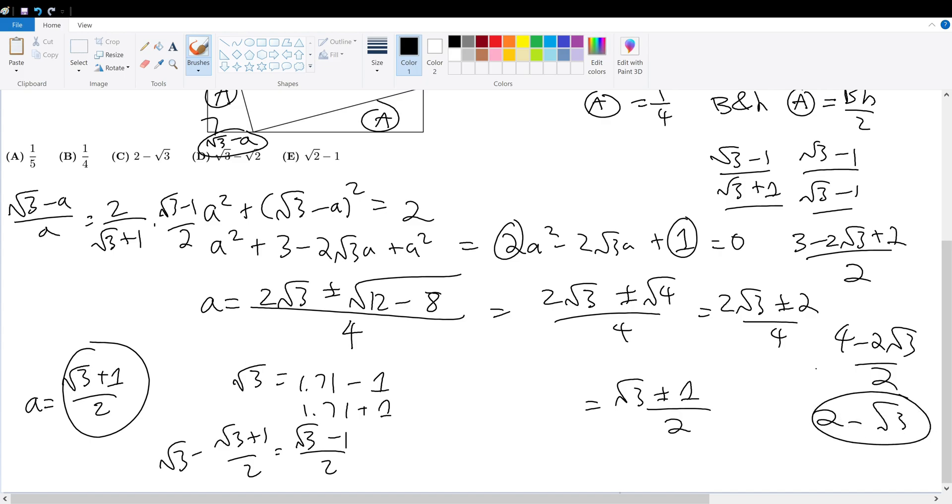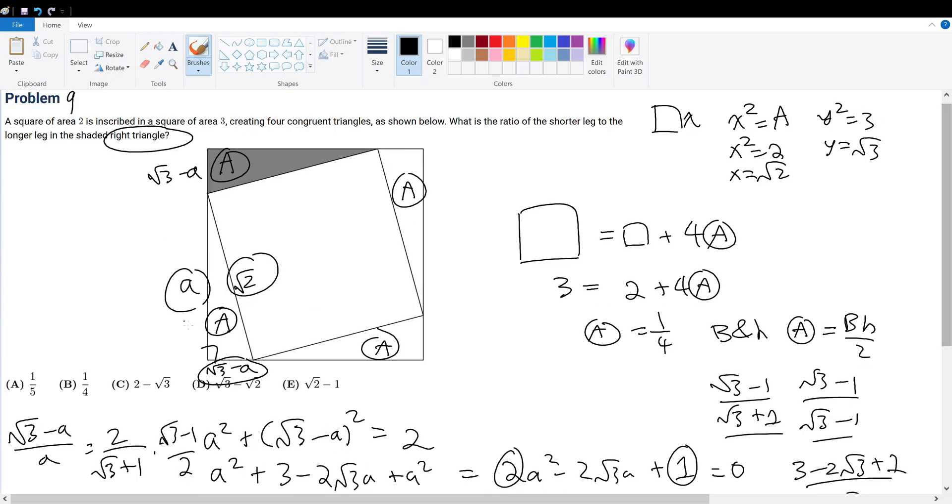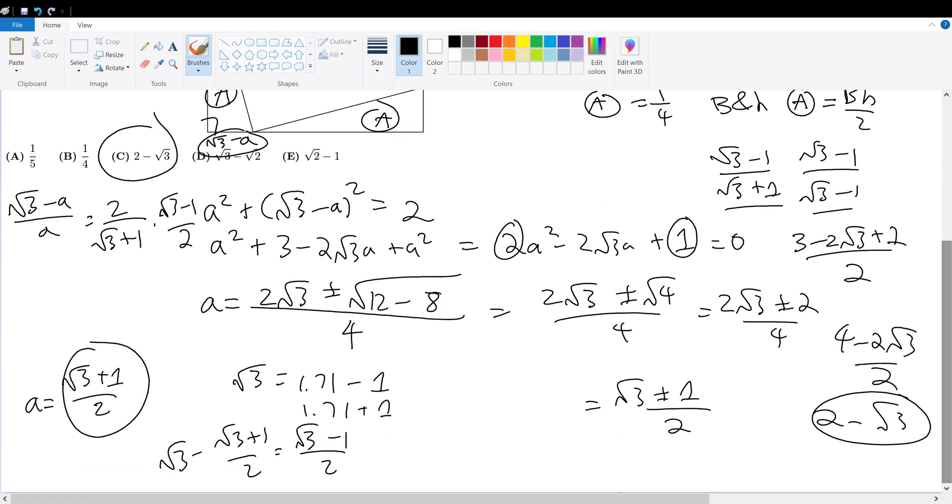But let's suppose that we chose the other condition. Now, the answer is C, but let's just suppose that on the test, you said, what if it's negative? What if I chose root 3 minus 1 over 2? Well, let's see what happens. If it's root 3 minus 1, we're still trying to find the same ratio. The ratio has never changed, which is root 3 minus A over A.